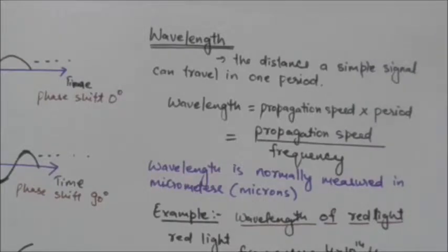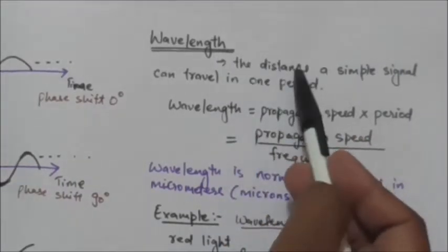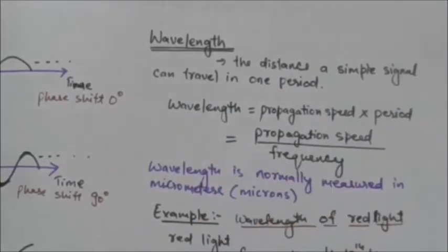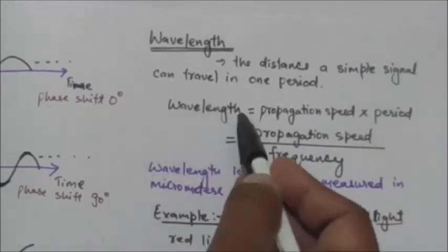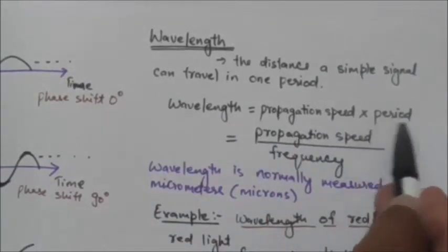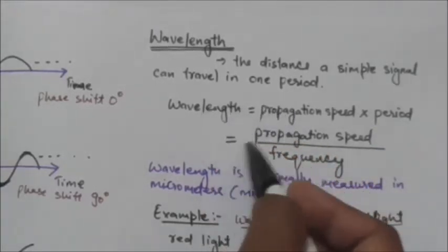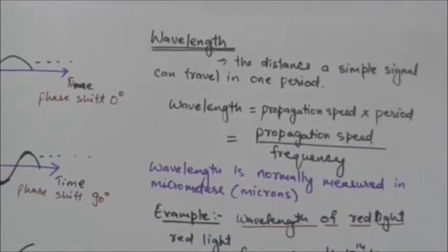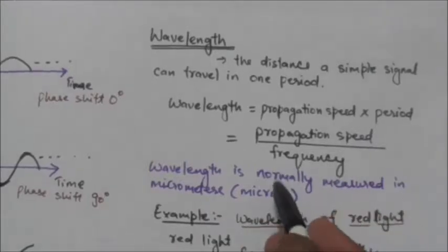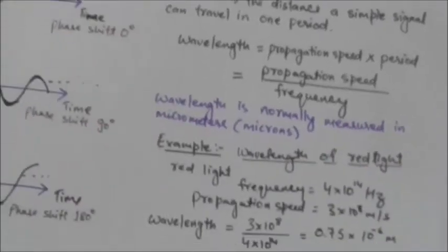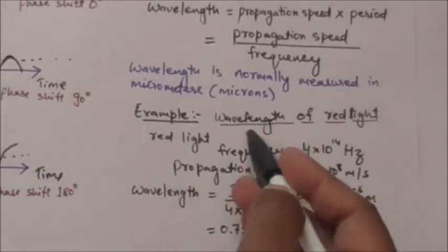The wavelength is another characteristic of a signal traveling through a transmission medium. The wavelength is the distance a simple signal can travel in one period. The formula is: wavelength equals propagation speed multiplied by period, or equivalently, wavelength equals propagation speed divided by frequency. The frequency of a signal is independent of the medium, but the wavelength depends on both the frequency and the medium. Wavelength is normally measured in micrometers or microns.